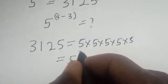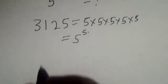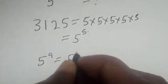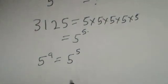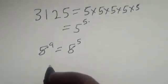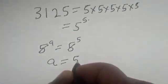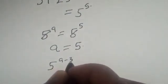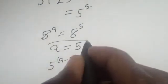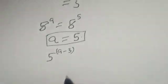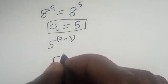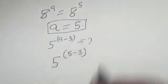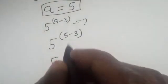This is equal to 5 raised to power 5. So we have 5 raised to power a is equal to 5 raised to power 5. They have the same base, so a is equal to 5. Now what we have to find is 5 raised to power a minus 3. Since a equals 5, we have 5 raised to power 5 minus 3.